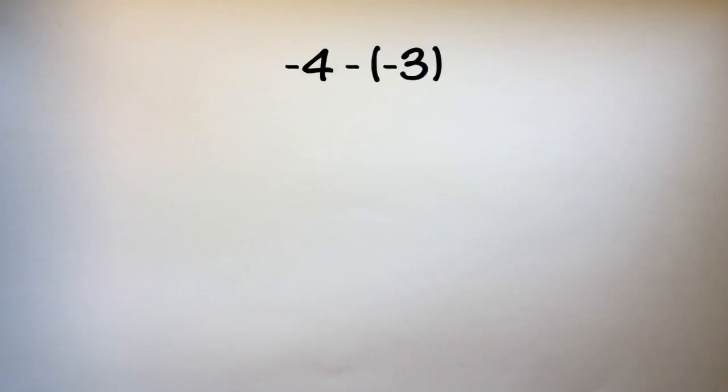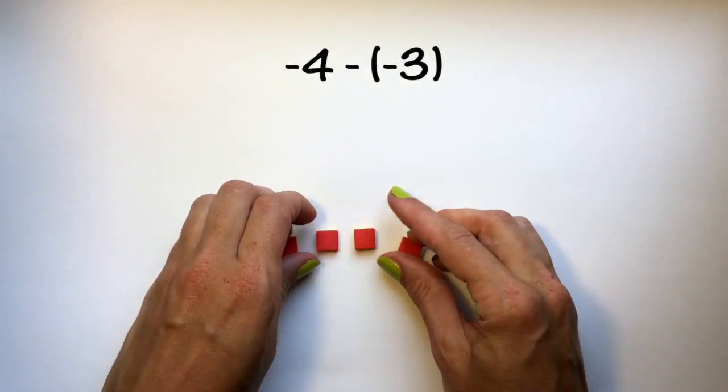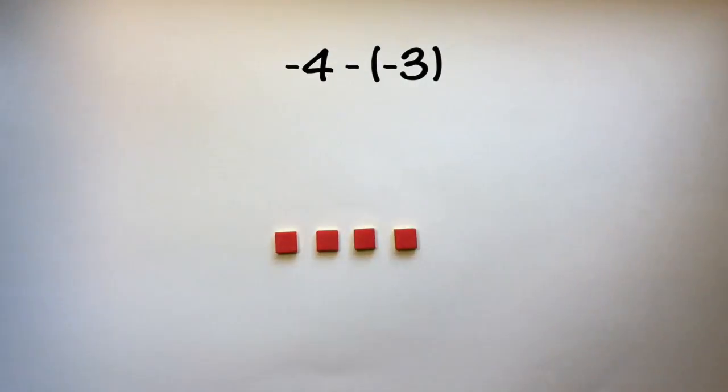I'm going to explain the solution to each of these problems using both methods. The first problem you tried was negative 4 minus negative 3. Let's first look at the zero pair method.